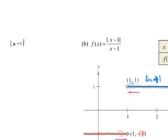Consider the absolute value of x minus 1. This breaks into two parts. If the inside is positive or zero, it returns the same number — for instance, the absolute value of 5 is 5. If the inside is negative, it returns the opposite — the absolute value of negative 2 is positive 2. So a positive input gives a positive output, and a negative input also gives a positive output.